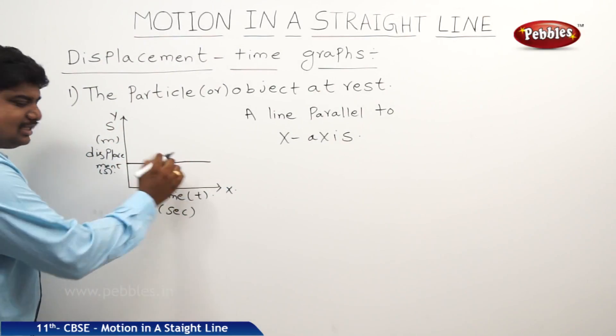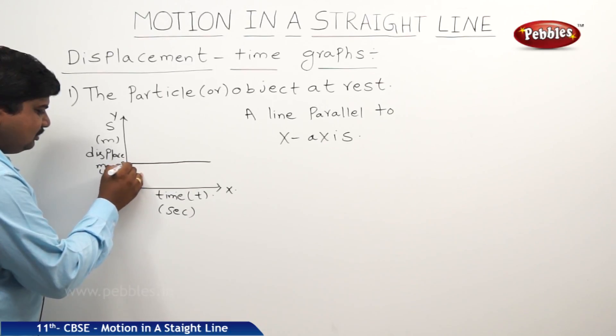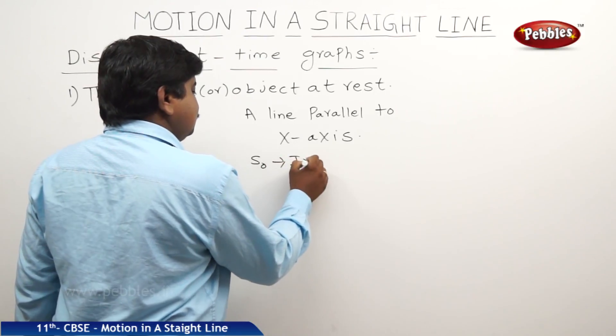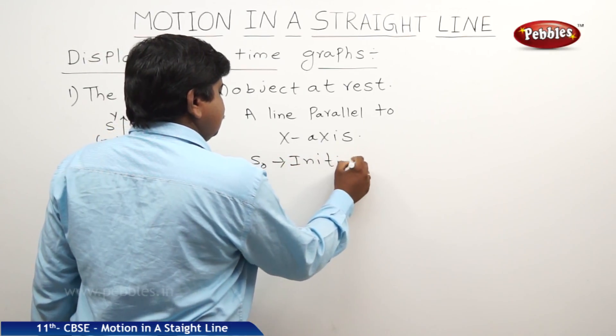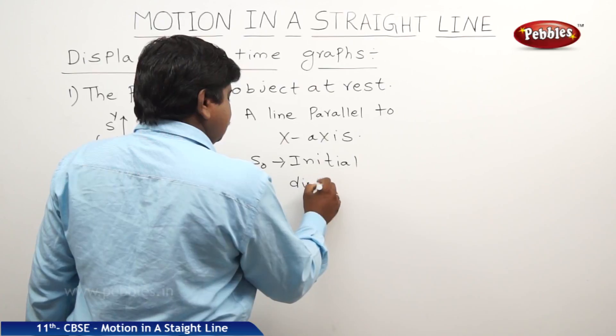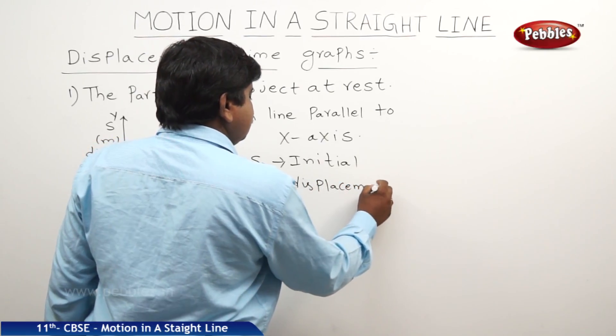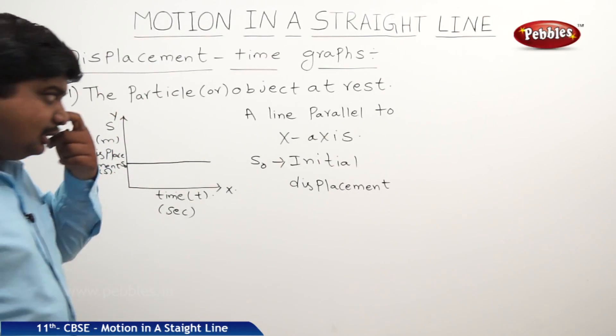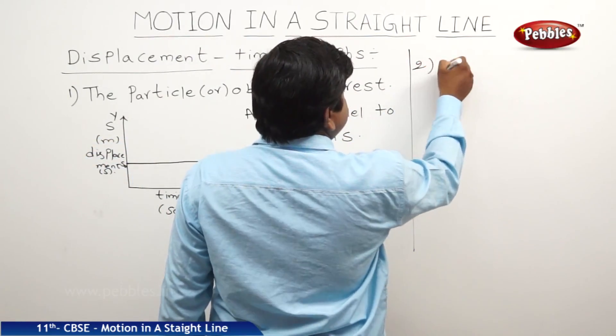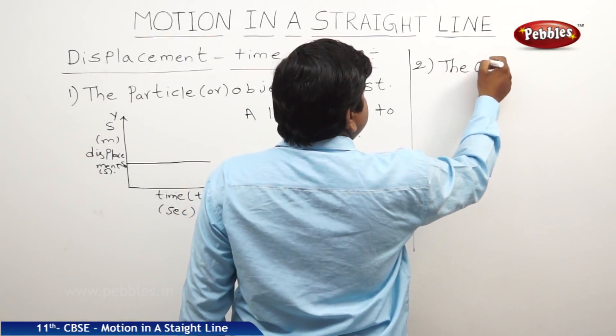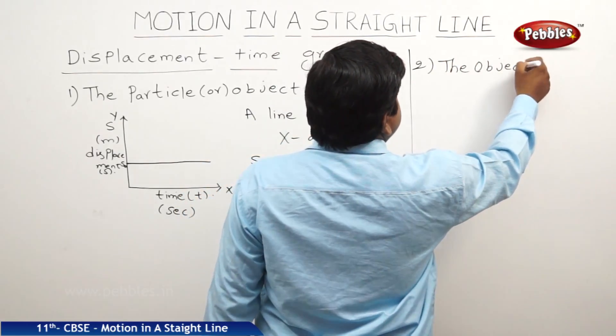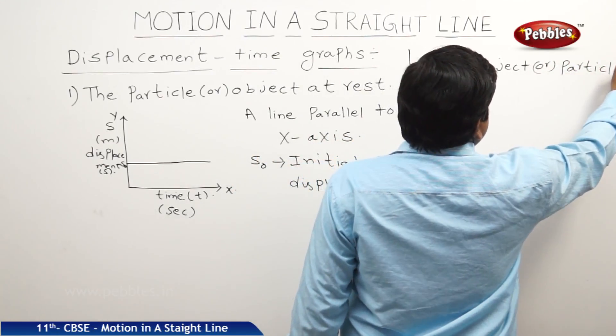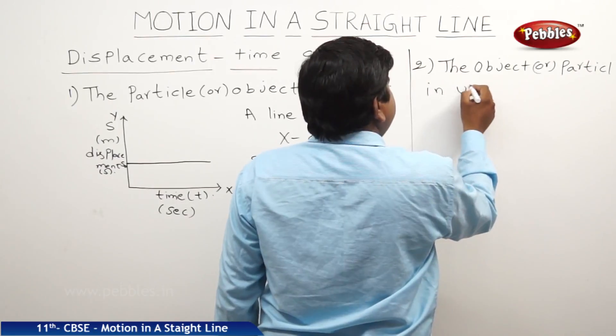At which point the lines have start? That point we can say that S0. This S0 is initial displacement. This is one of the situation in the displacement time graphs. And second one, the body is in uniform motion. The object or particle in uniform motion.